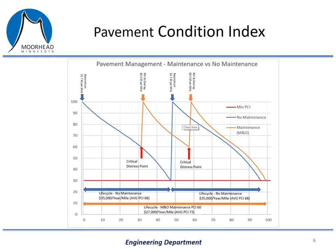Across the bottom of the graph are several blue and orange arrows representing the life cycles of the roads. These arrows show that a road with mill and overlay maintenance actually extends the life of the road — meaning it's a longer period of time before we need to reconstruct it. Not only do we extend the life of the road, but based on data from past projects, we know that we will spend less money maintaining our roads this way, and the condition will be maintained at a higher level. The average PCI of a road with no maintenance is 68, while the average PCI of a road with mill and overlay maintenance is 73 — meaning it's a nicer road and a smoother ride.